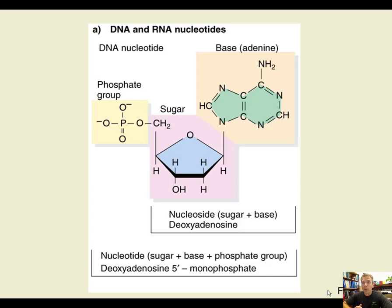The first picture here shows a molecule of a nucleotide. The structure of a nucleotide contains three components: the phosphate group on the left, the sugar in the middle, and the base on the right — in this case, adenine. A couple of nomenclature points: the word nucleotide refers to all three together, whereas the word nucleoside contains just the sugar and the base together. When you add the phosphate, it becomes a nucleotide.